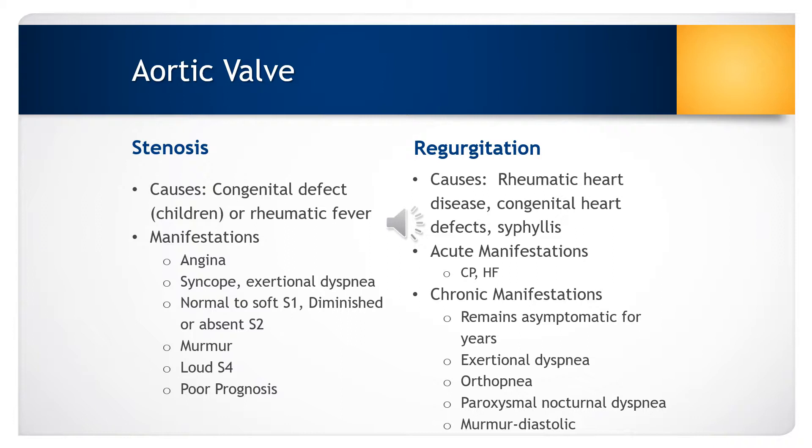Typical signs and symptoms of someone with aortic valve stenosis include angina, syncope, and exertional dyspnea. They may have a normal to soft S1 but a diminished or absent S2, a heart murmur, and a loud S4. Typically, someone with aortic valve stenosis has a poor prognosis.